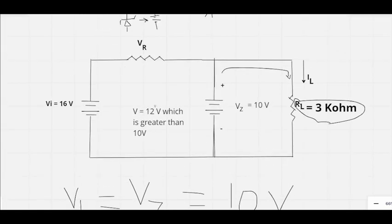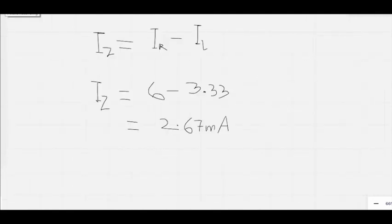So let's have a look at this circuit again. This IR is being divided into two parts. This is IR, it is coming here as Iz, and it is being divided into these two branches and this is IL. So we know IR, we know IL, we can simply calculate the value of Iz like this: subtracting 6 minus 3.33. Simple math, we can calculate the value of Iz. This is Iz: 2.67 milliampere.